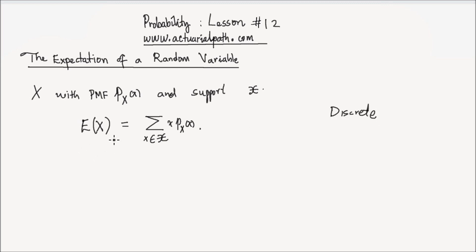Another notation which is often used is mu. Mu, or the expectation of x, simply means the average value taken by that random variable x.